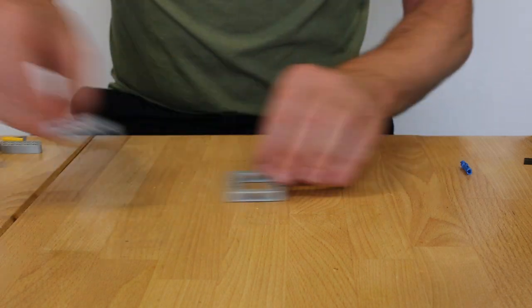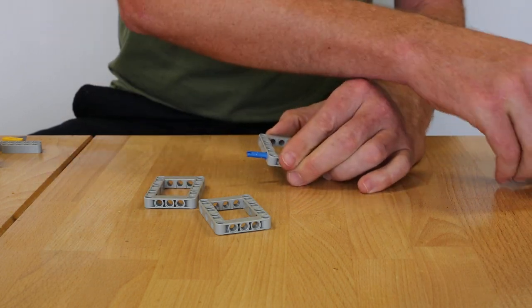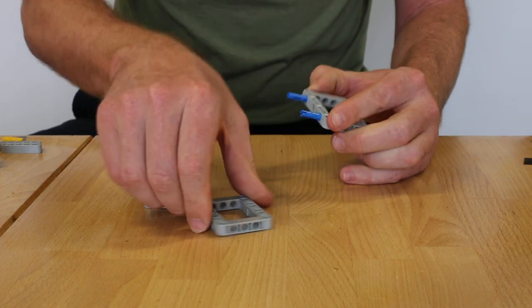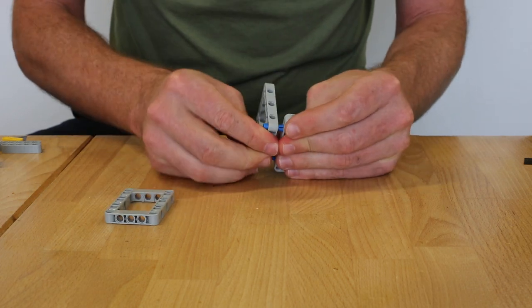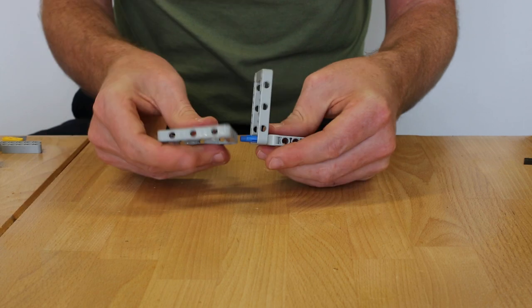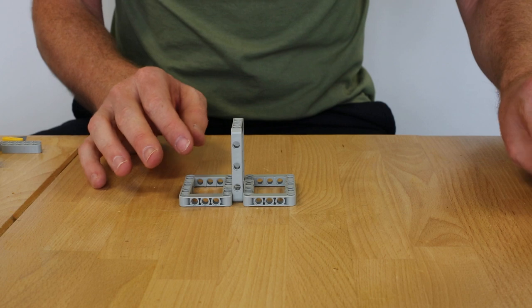We're going to start with the base. You need three pieces of chassis like that, and you're going to use the long blue clips to clip them together like this. That's going to provide you a nice firm base to start on.